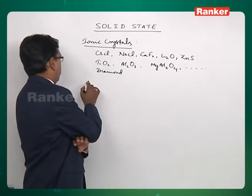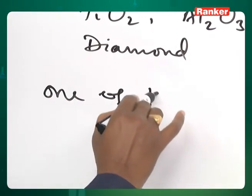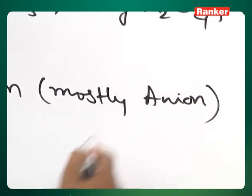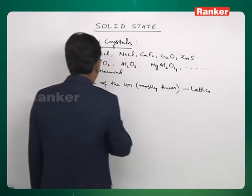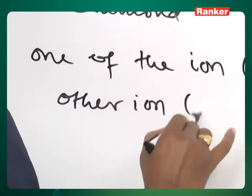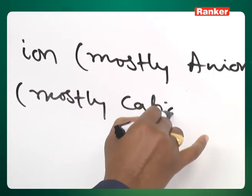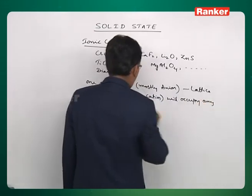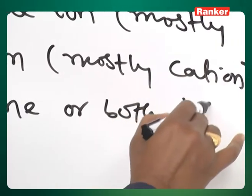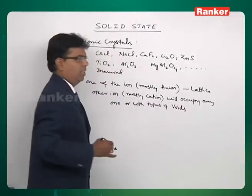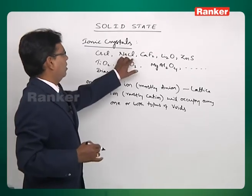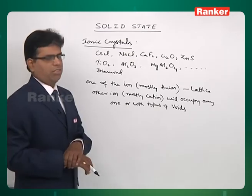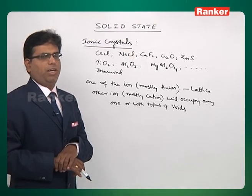In these ionic crystals, one of the ions — mostly the anion — will form the lattice, and the other ion — mostly the cation — will occupy any one or both types of voids, that is the tetrahedral void or octahedral void. For example, in NaCl, the chloride ion will form the lattice and sodium ions occupy the octahedral voids. And in the case of zinc sulfide, the sulfide ion will form the lattice and zinc ions will occupy the tetrahedral voids.